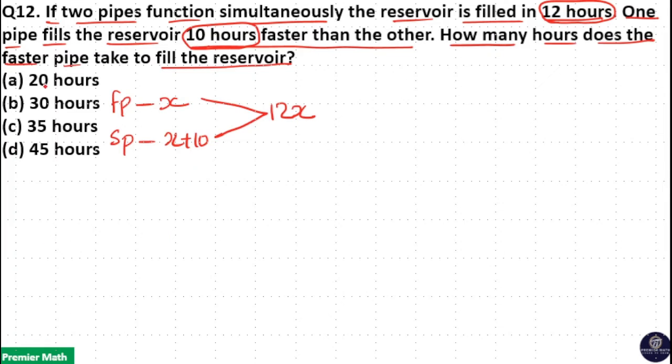From the options, it is clear that the difference between 20 and 30 is 10 hours and the difference between 35 and 45 is 10 hours.